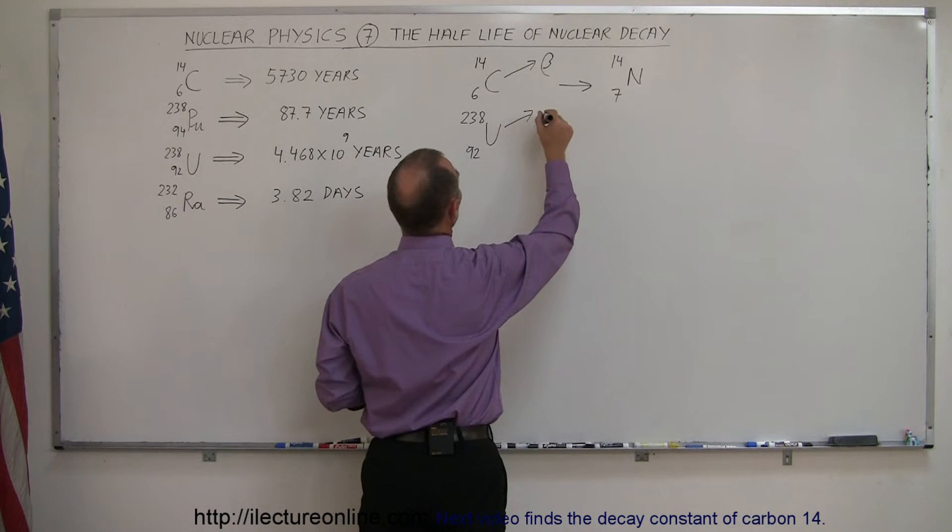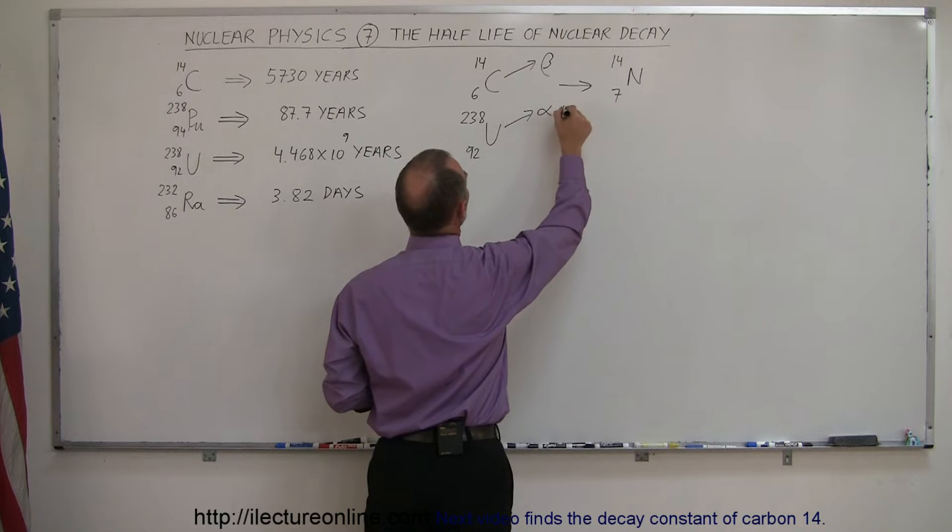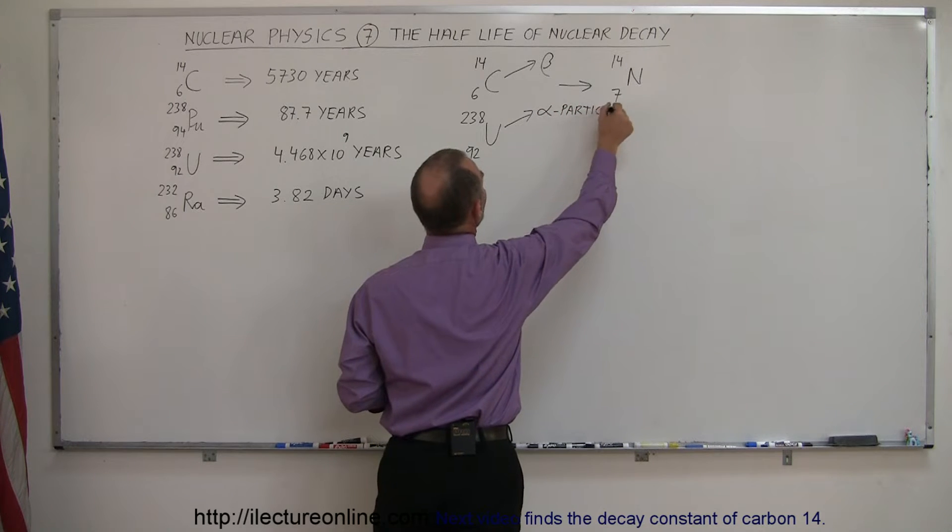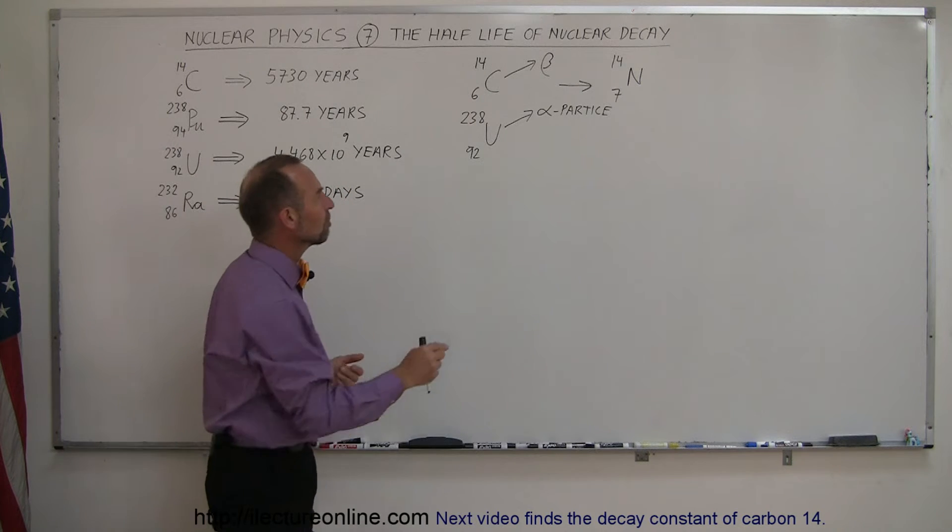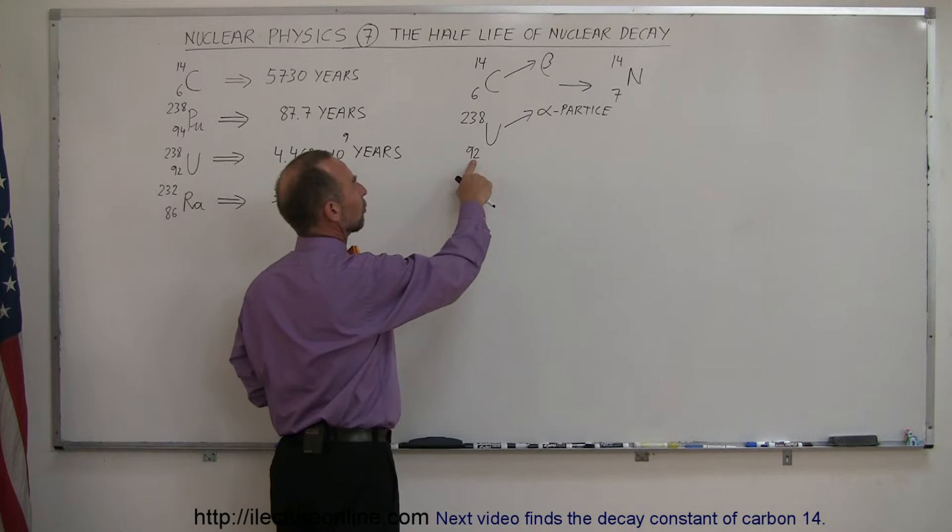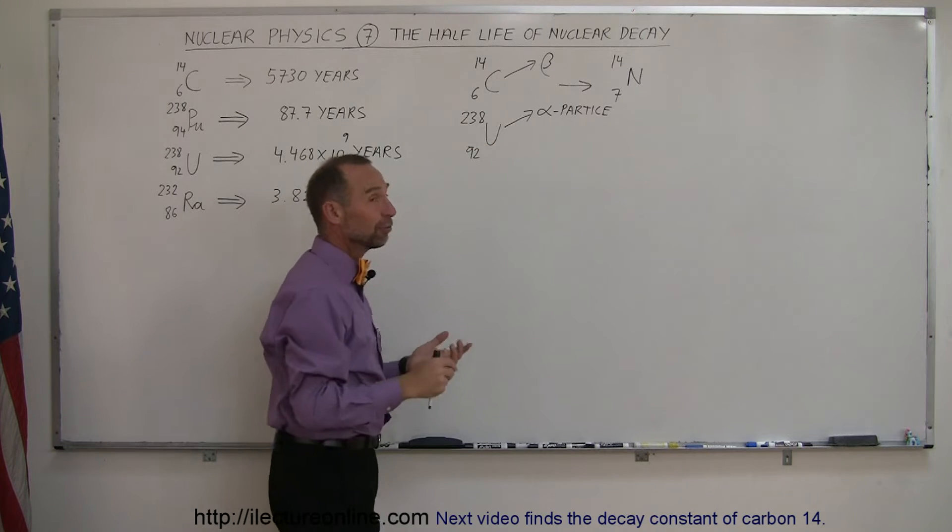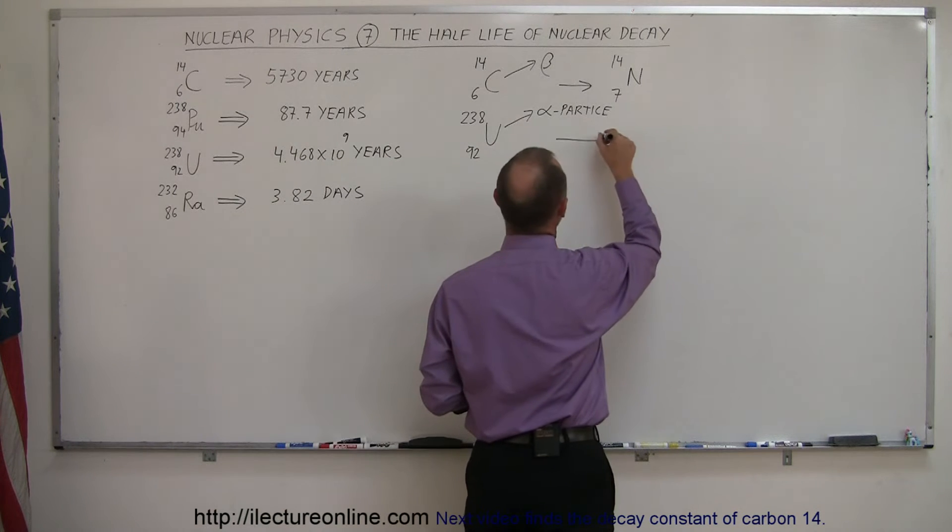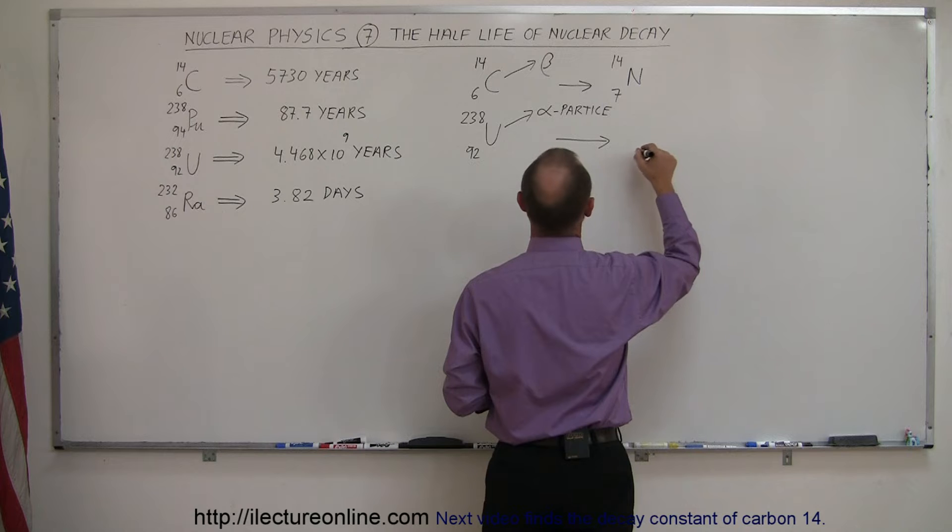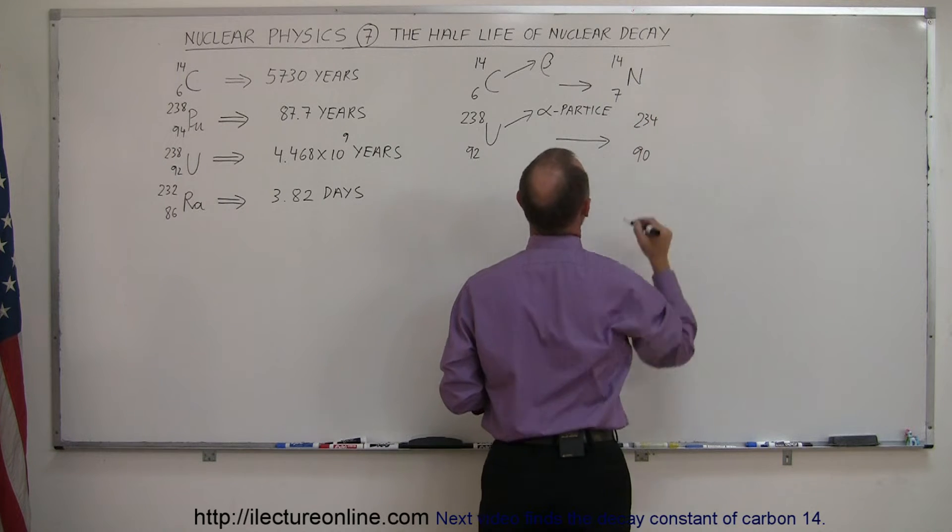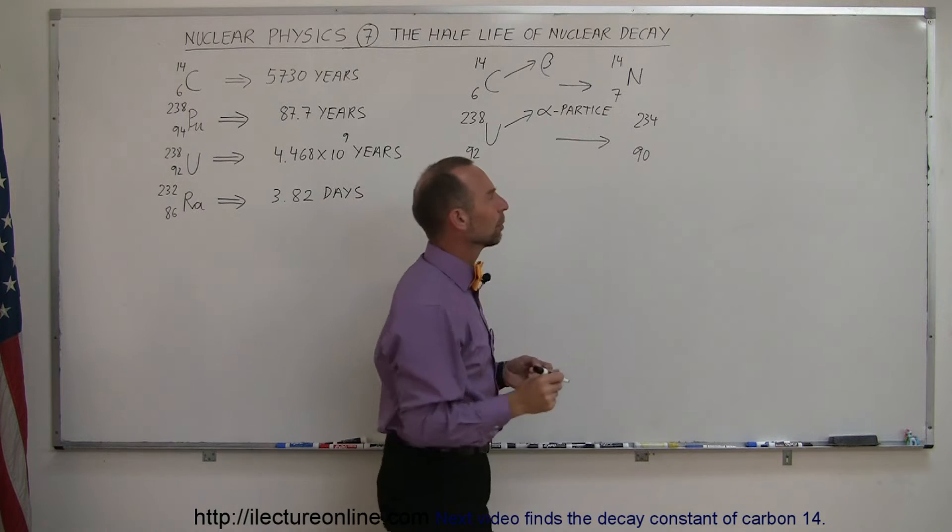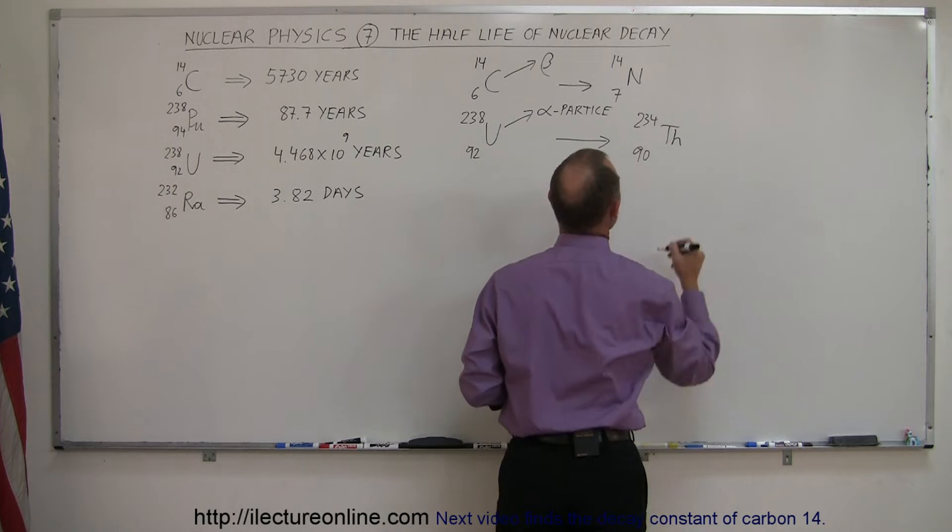An alpha particle is like the nucleus of a helium atom, which contains two protons and two neutrons, which means it reduces the number of protons by two and the number of nucleons by four. And it then turns into something that now has only 90 protons and 234 total nucleons. And that is the element thorium, thorium-90.